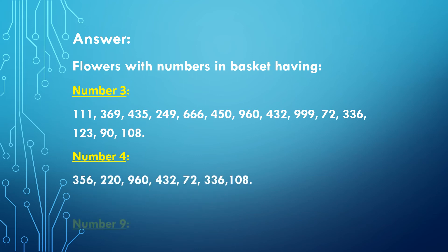Flowers in the basket having number 4: 356, 220, 960, 432, 72, 336, 108. To check divisibility by 4, you look at the digits in the units and tens place. For example, 356 — the number at units and tens place is 56, and 56 is divisible by 4. Therefore, 356 is also divisible by 4.